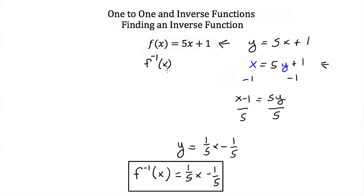To summarize the steps: Step one, write the function as y = 5x + 1. Step two, swap all y's for x's and all x's for y's. Step three, solve the new equation so that y is alone on one side. Then replace y with f⁻¹(x), which is the symbol for the inverse function.